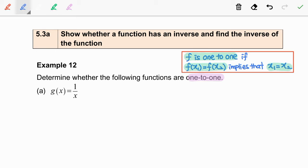Question A: given the function g is 1 over x. So we are going to let g(x1) is equal to g(x2). On the left-hand side, we are going to replace x1 into the function g. So we have 1 over x1.